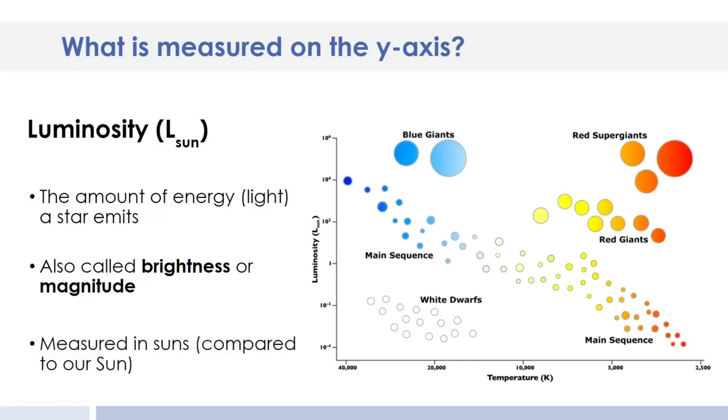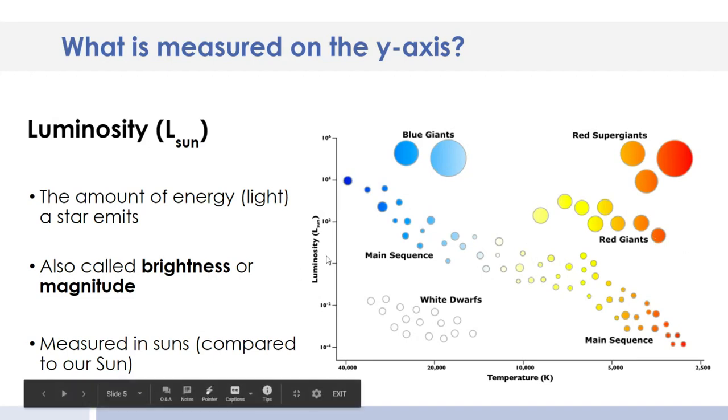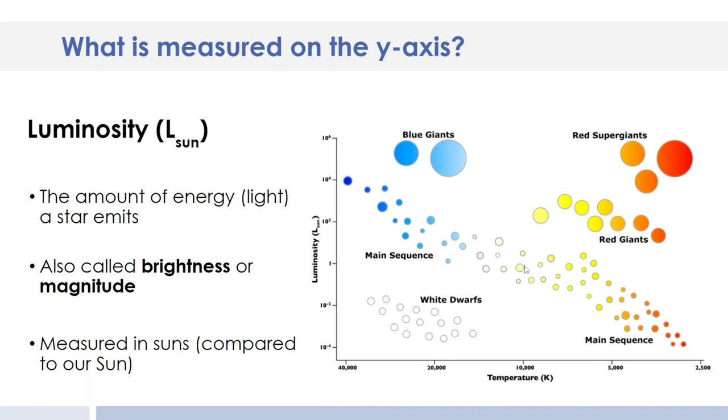The reason you see that L sun is because luminosity is measured in suns, like our sun in our solar system. So the one right in the middle of the y-axis, that's one of our sun. And so anything along this line is the same brightness as our sun.